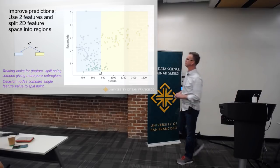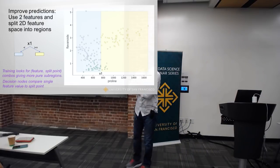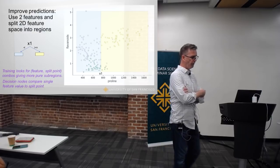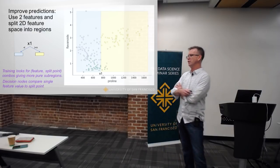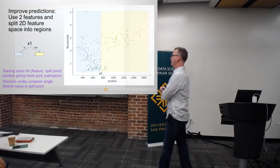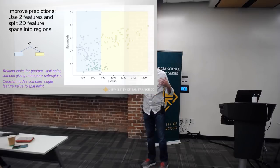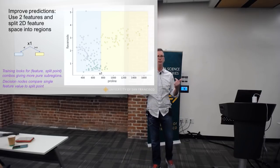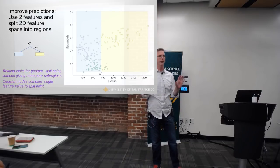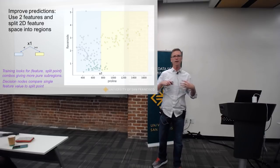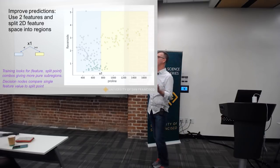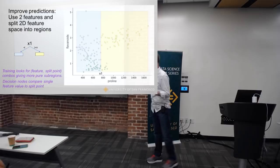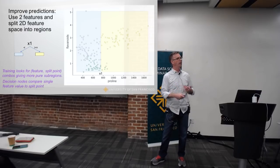Obviously we don't have single-variable datasets very often, so let's think about a two-dimensional problem. The idea is, once again, that we're going to partition feature space — but now that I have two dimensions, it's kind of like a tessellation of this space.